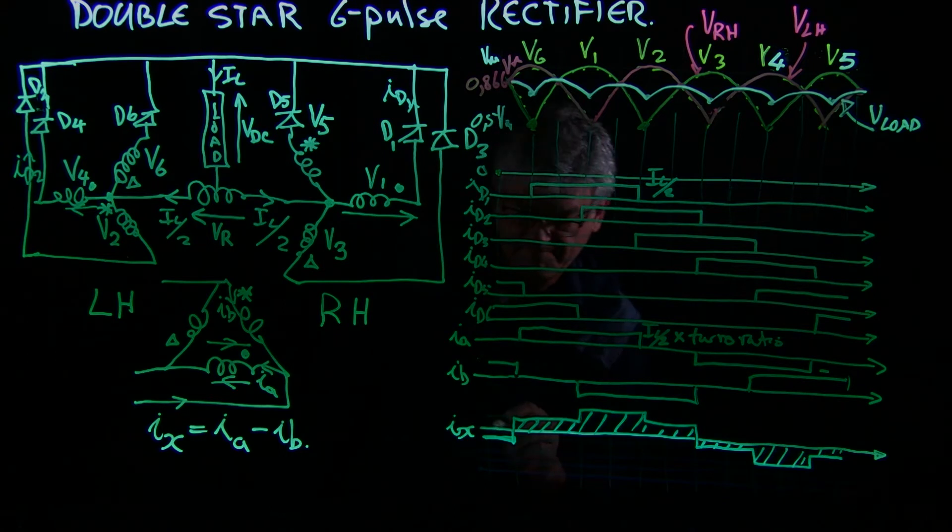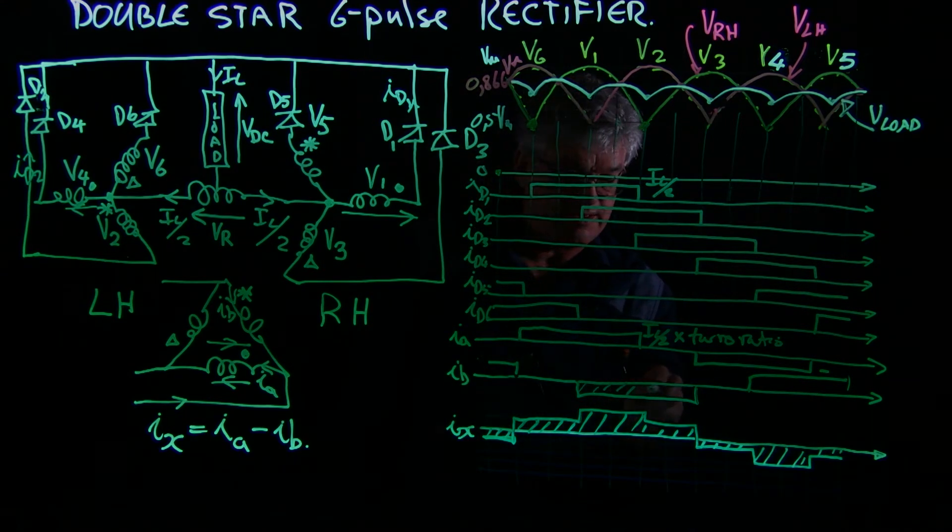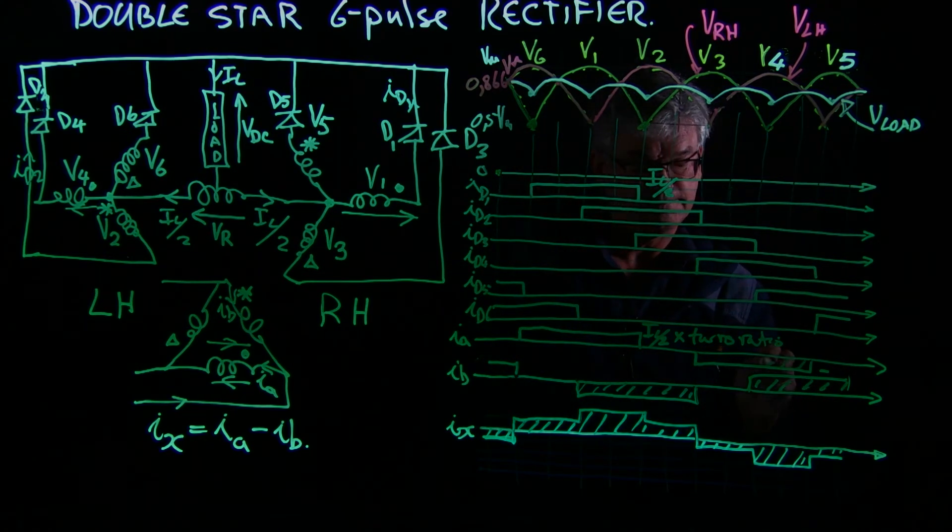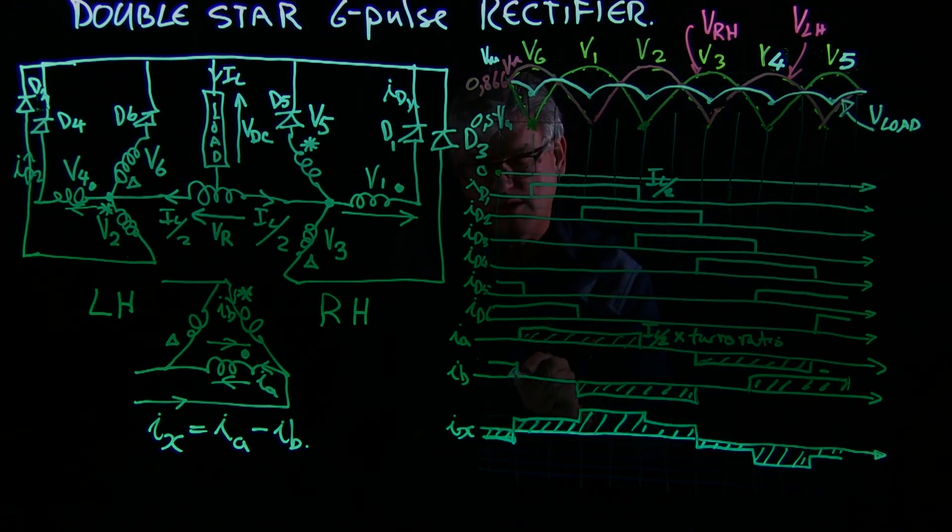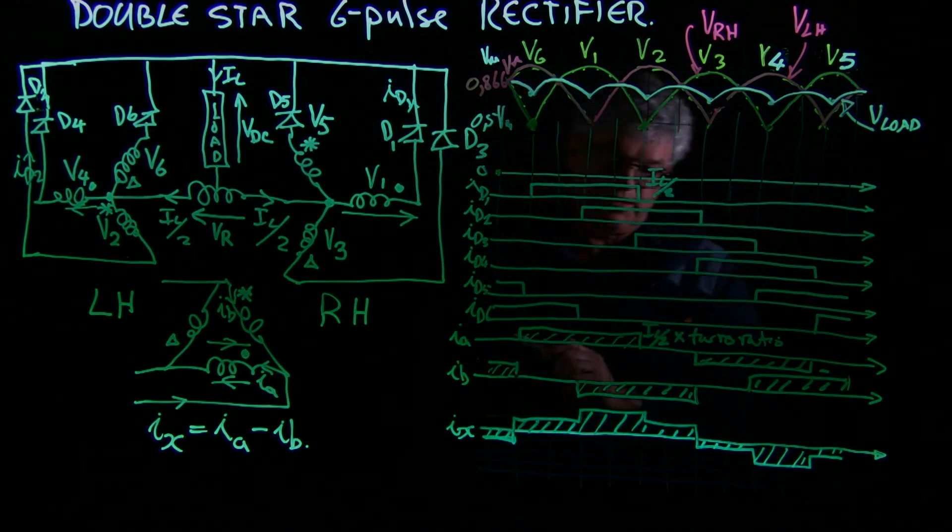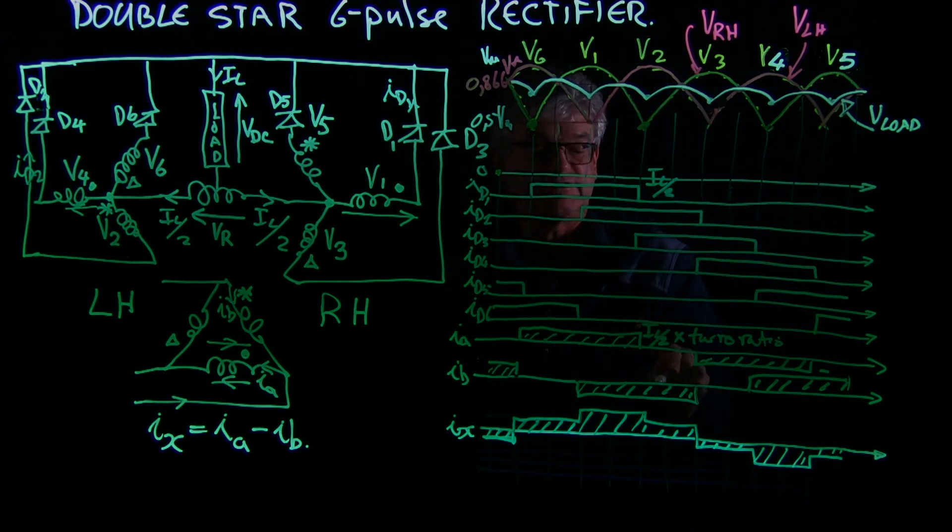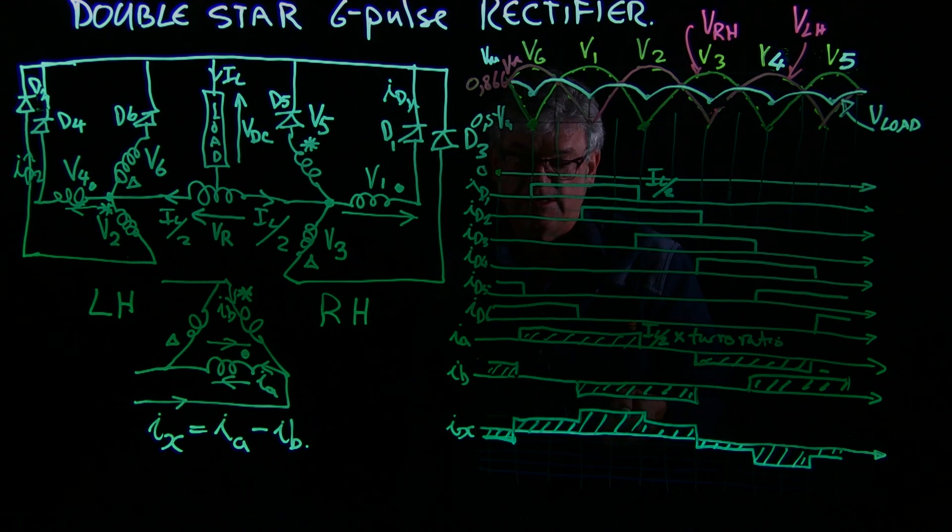And here with IB and Ia, we have quasi square waves. And it is interesting to note that subtracting two quasi square waves, 120 degrees phase shifted from each other, will give you a stepped waveform.